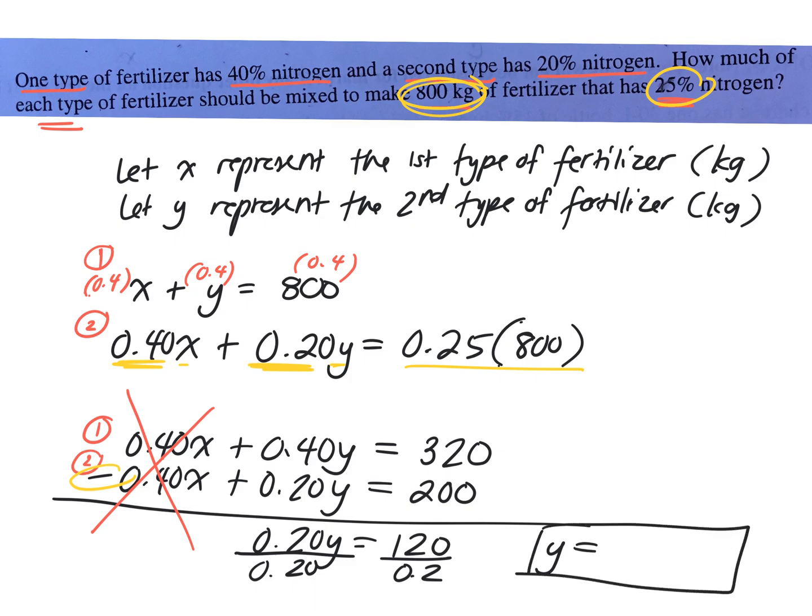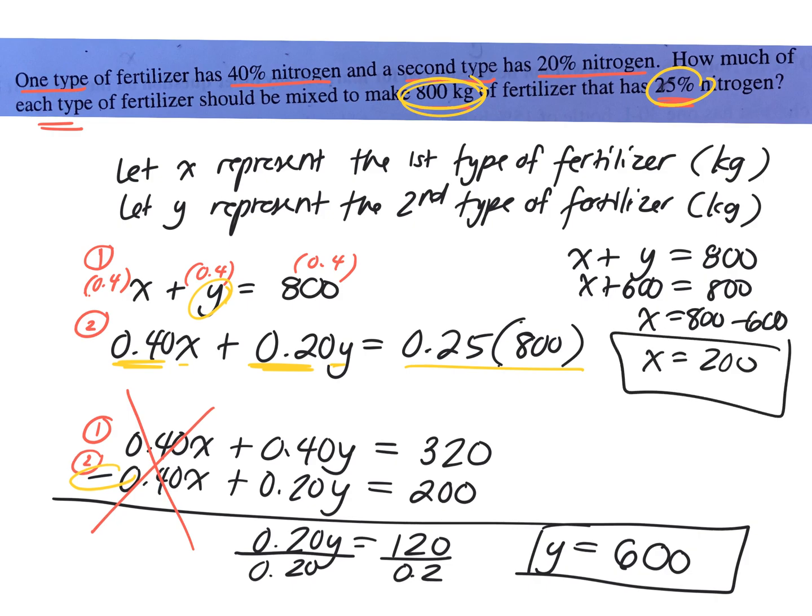So that's the answer for y. So the question said how much of each type of fertilizer should be mixed? Well, we need to mix 600 kilograms of the second type of fertilizer. Well, the total was 800. We can do this in our head. x + y = 800, right? If we know y is 600, x is 200. Good. So x = 800 - 600, x equals 200.